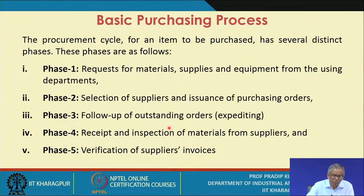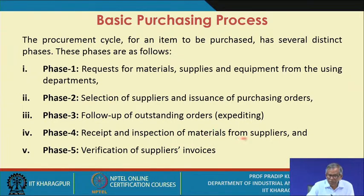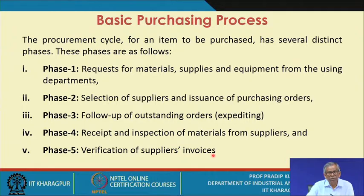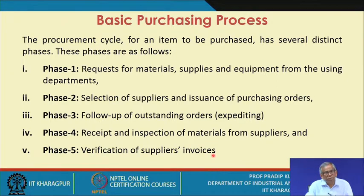Once the follow-up is over, you receive the orders, and once you receive them, you go for inspection of the materials at your workplace. Receipt and inspection of materials from suppliers is essentially phase four. At the last phase, phase five, you verify the supplier invoices and instruct your finance or accounts department to make the payment. Making payment is not the responsibility of the purchase department, but based on the purchase department's recommendations, the finance department is responsible for making payment. All these phases we will discuss in detail.